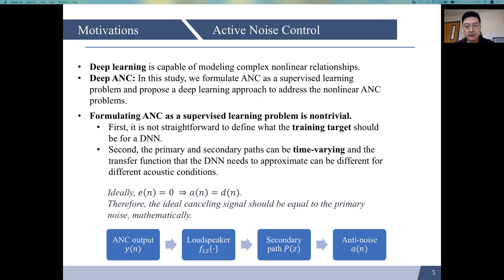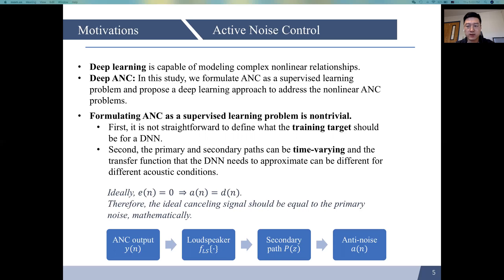However, formulating ANC as a supervised learning problem is non-trivial. There are two conceptual obstacles to such a formulation. First, it is not straightforward to define what the training target should be for the deep network, because although the ideal cancelling signal for attenuating primary noise is known, it cannot be used directly as the desired output due to the existence of the loudspeaker and the secondary path. Second, the primary and secondary paths can be time-varying, and the transfer function that the network needs to approximate can be different for different acoustic environments. This seems to imply that a supervised learning model needs to predict a one-to-many mapping, which is an impossible job.